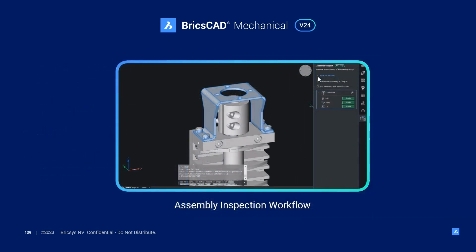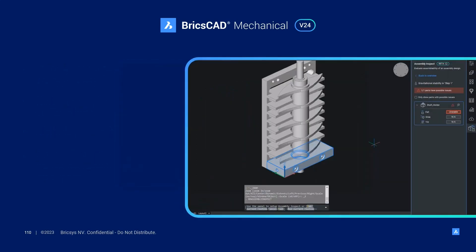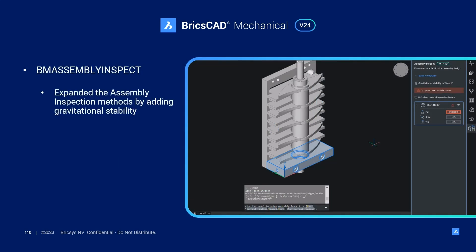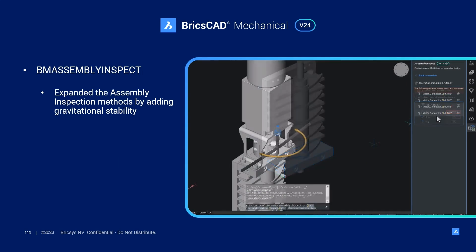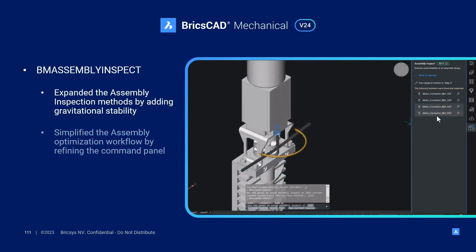In V24.2, we've made some updates to the BM Assembly Inspect feature which enhanced the following workflow. These include expanding the assembly inspection methods by adding gravitational stability, and simplifying the assembly optimization workflow by refining the command panel.